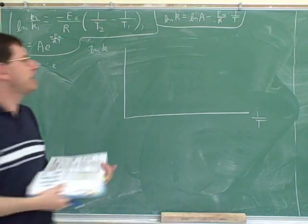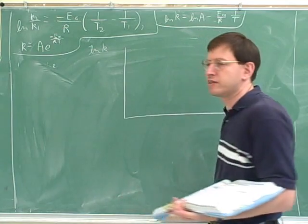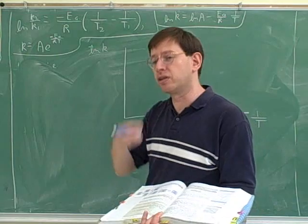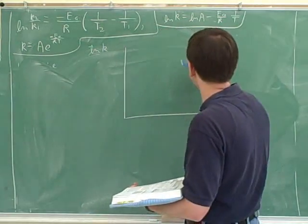ln A. Yeah. ln A. It's good that you remembered that. And what would be the slope? Minus E_A over R. Minus E_A over R. Good. So it looks like you guys are remembering that high school algebra.